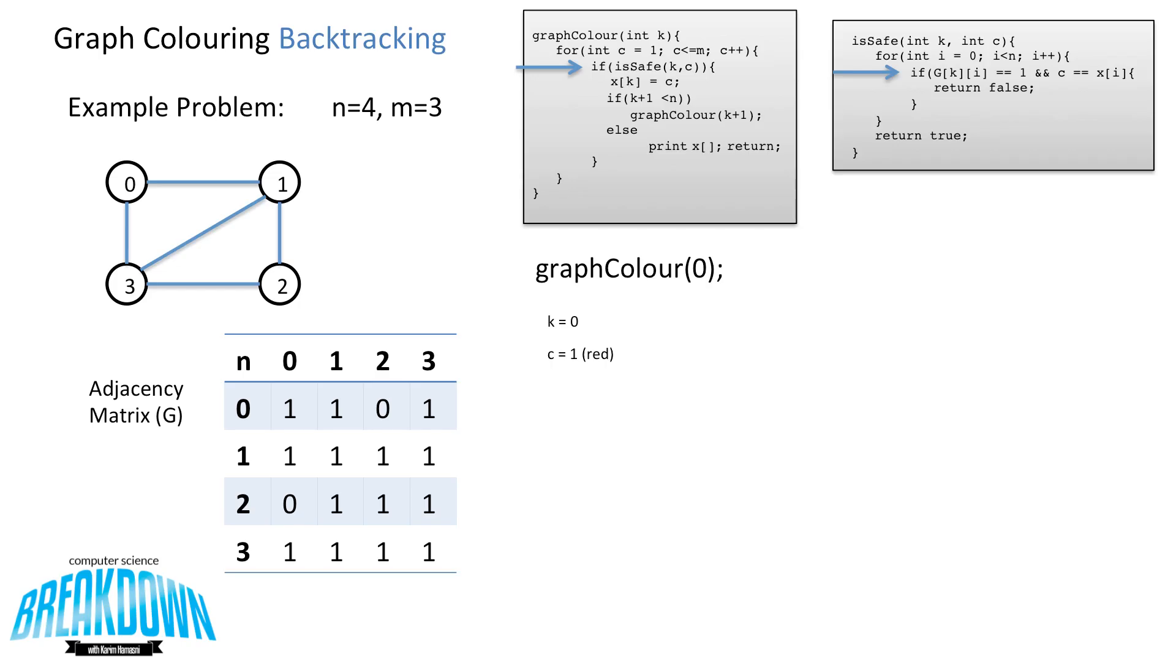So isSafe will start a new loop. In the first iteration, i is equal to 0. And then it'll check to see if G[K][i] is equal to 1. So G[0][0] is equal to 1 because a node is adjacent to itself. And then it'll check to see if C is equal to X at i. And it is not, because C is equal to 1. And so far since the X array is filled with all zeros, then they are not equal. So 1 is not equal to 0. So then it tries the next iteration of the loop, i is equal to 1. And it checks to see if G[K][i] is equal to 1, which it is, they are adjacent. However, the colors are not equal because X is still filled with zeros, and 1 is not equal to any of those zeros. So this loop continues for all n, checking all the different nodes. And eventually, in this iteration, it'll return true.